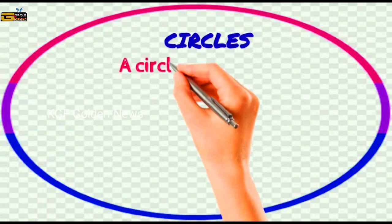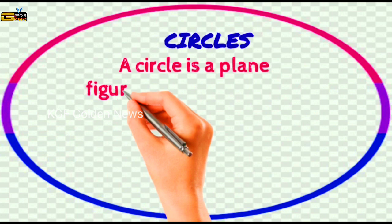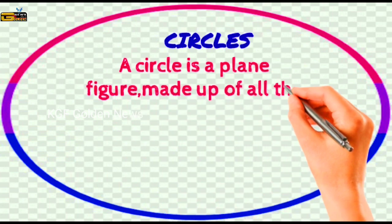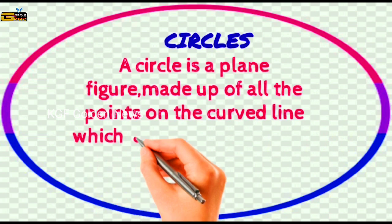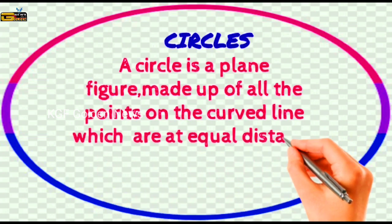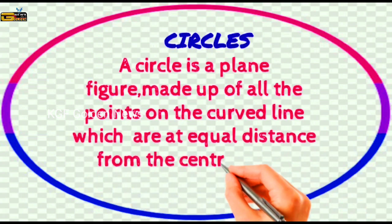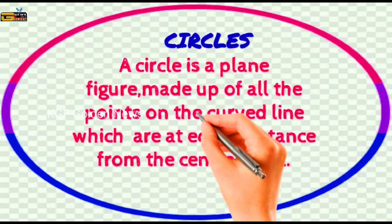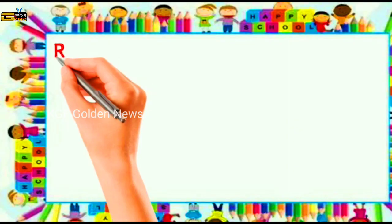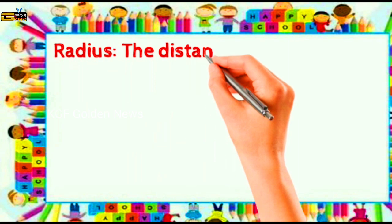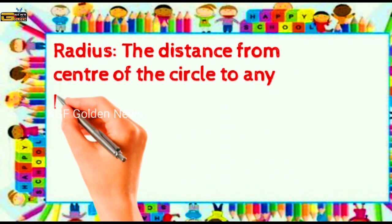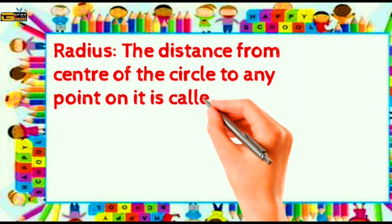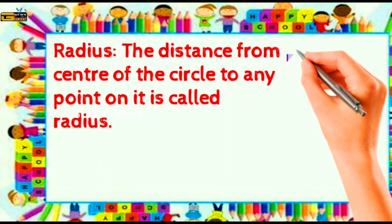A circle is a plane figure made up of all the points on the curved line which are at equal distance from the center point. Radius: The distance from the center of the circle to any point on it is called radius.